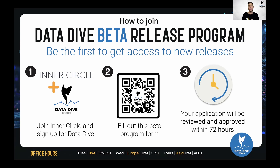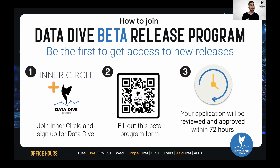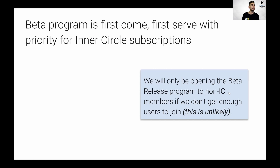If you are already in the beta access program, it means you're in Inner Circle — that's really the only way to get into the beta program now. Not everyone has access to the AI features, but people in the beta program do. If you're in Inner Circle and want to join the beta program, scan the QR code or go to datadive.tools/beta. Your application will be reviewed and approved likely within 72 hours.